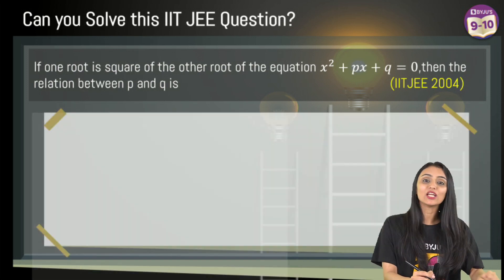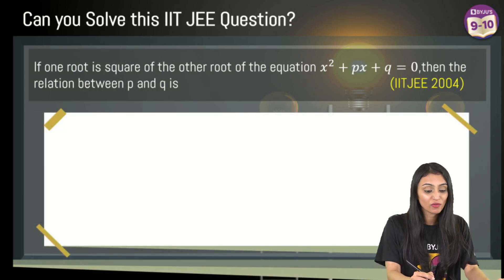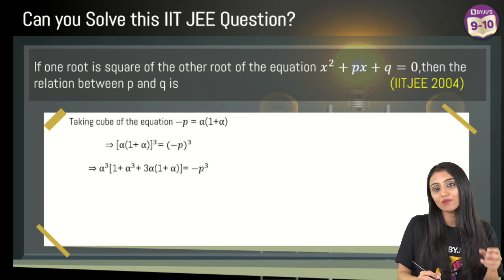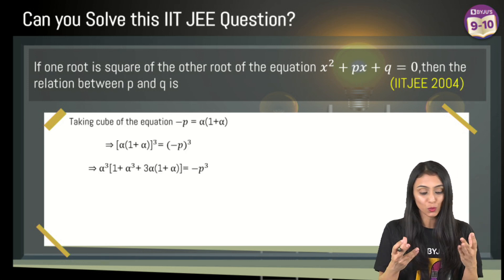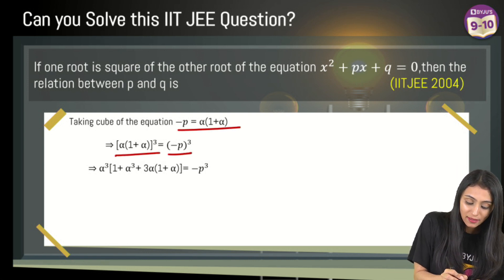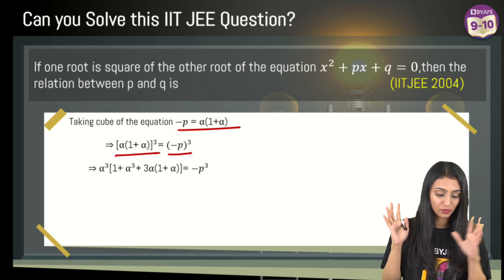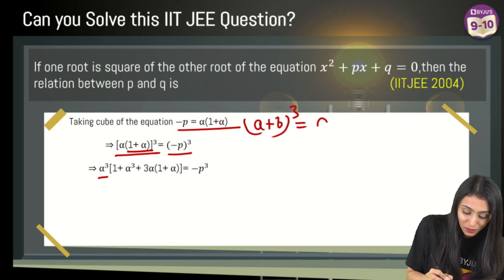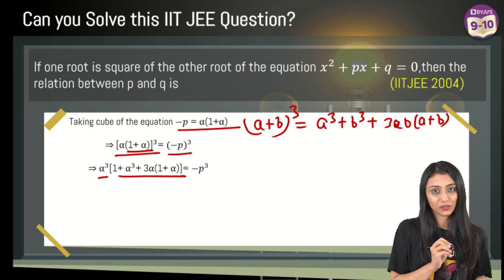I'll take cube on both sides. Why am I taking cube? If you look at the options, there was p³, so I'll only get p³ once I take cube. So we have -p³ equals alpha cubed times (1 + alpha)³. I'm using the identity (a + b)³ = a³ + b³ + 3ab(a + b), replacing a and b with 1 and alpha.